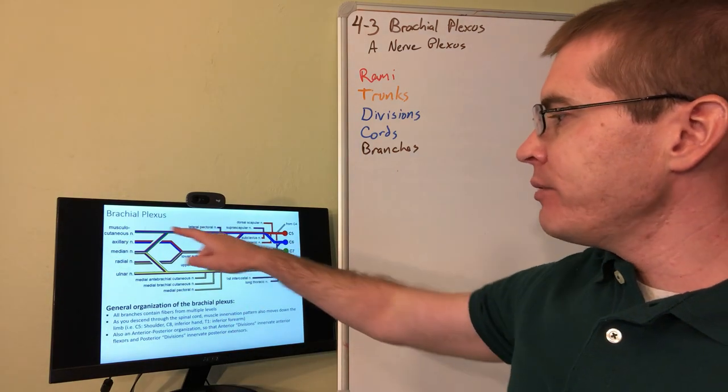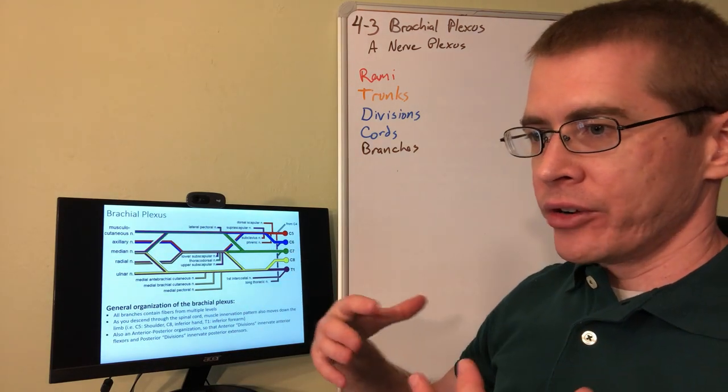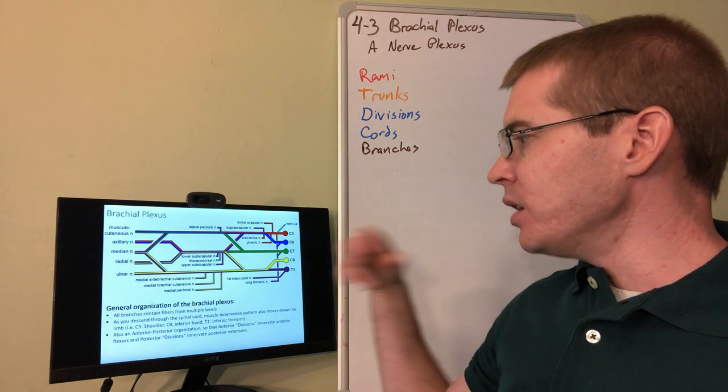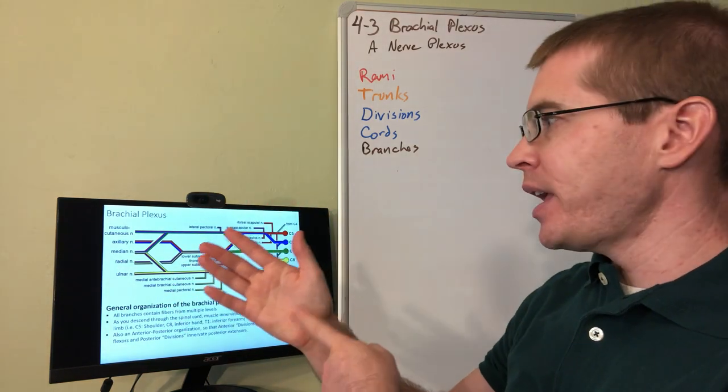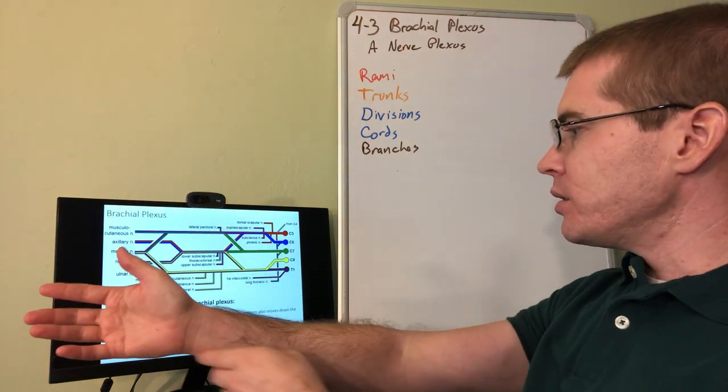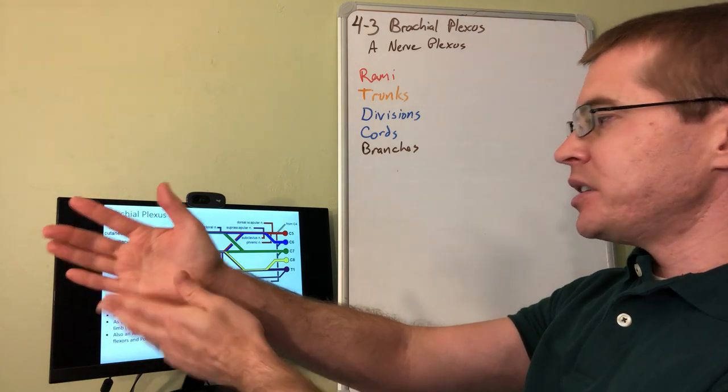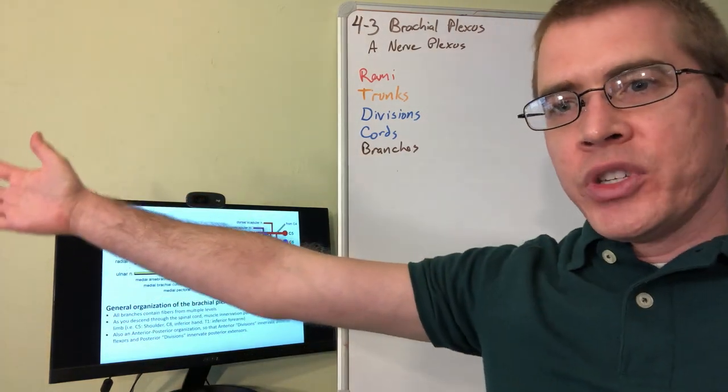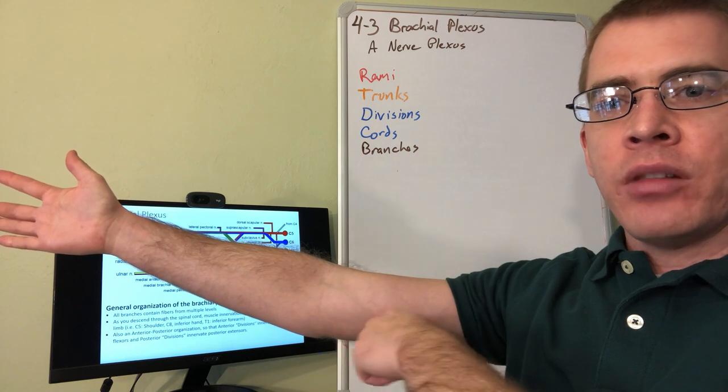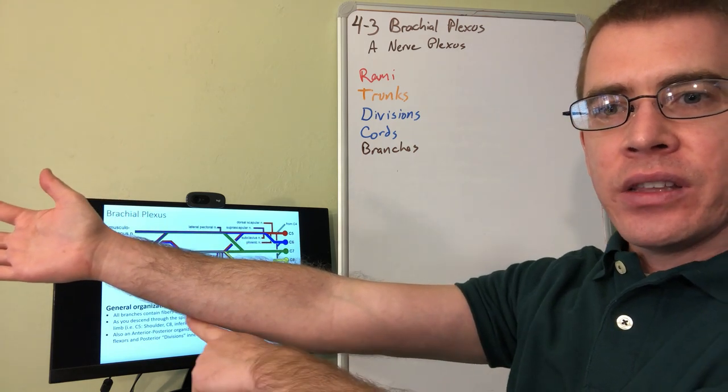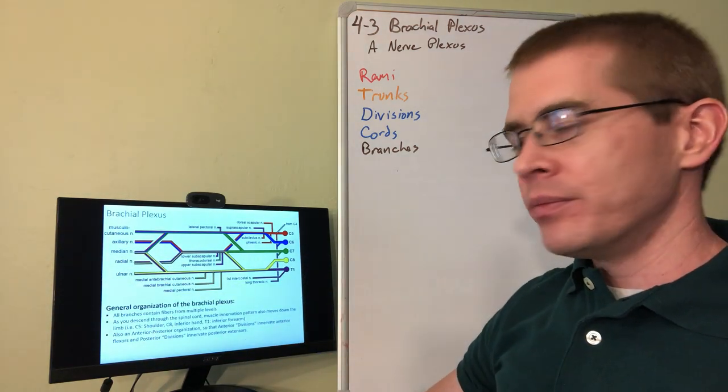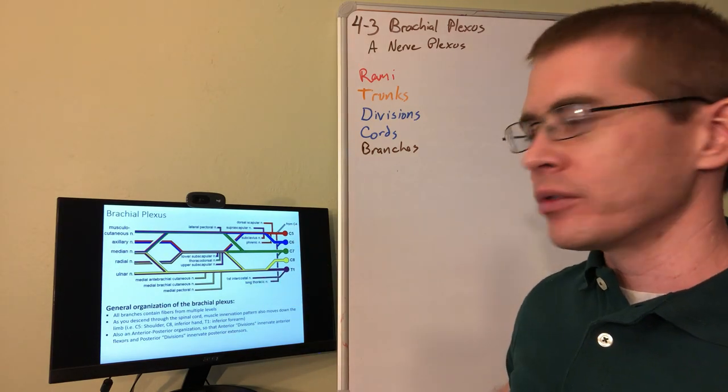So C5 is going to be innervating the shoulder and the upper arm, biceps region. C8 is going to be the inferior portion of the hand. So you'll also have some cutaneous from C5 going through the arm. And then T1. So if you look at the anatomical position, the lowest portion of your upper limb is not your hand. It's actually your elbow region. So T1 innervates this dermatome on the forearm. So you can use that rule of thumb if you need to. But yeah, this is the critical information from this lecture.